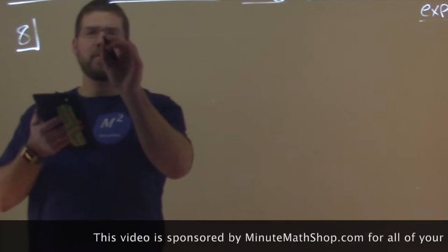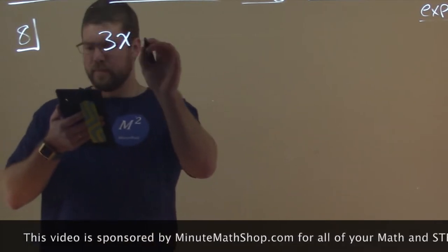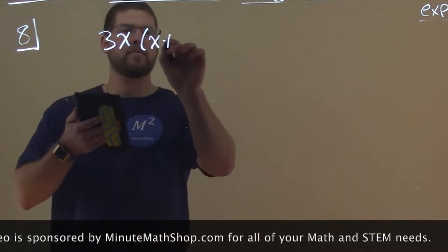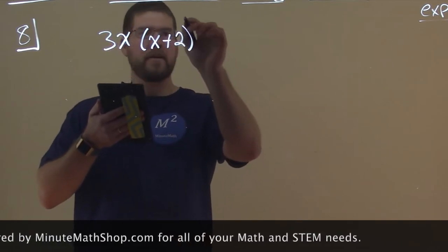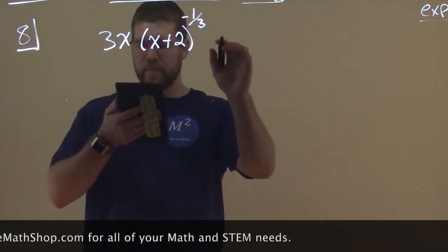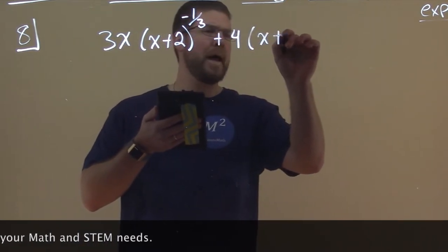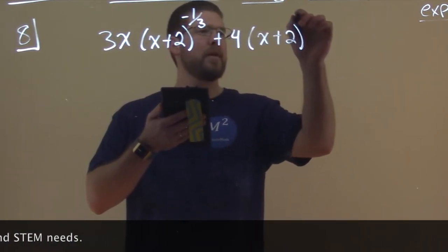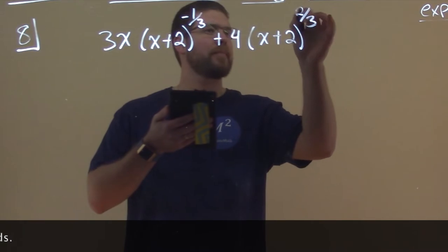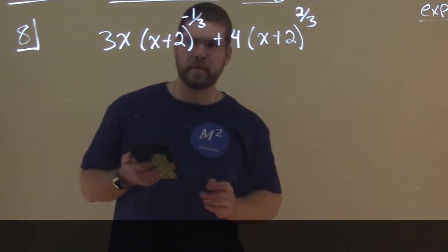Let's say we're given this: 3x times (x+2) to the negative 1/3 power, plus 4 times (x+2) to the positive 2/3 power. Okay, we got 2/3 power there.